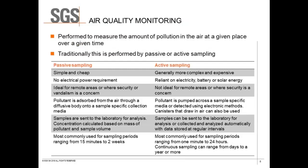The basic definition of air quality monitoring is that it's performed to measure the amount of pollution in the air at a given place over a given time. Traditionally, there are two ways of air quality monitoring: passive sampling and active. As I said, both have advantages and drawbacks.